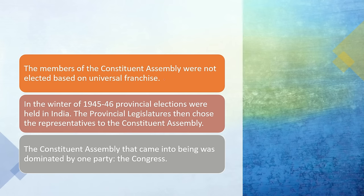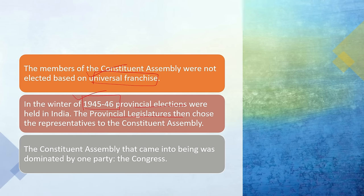Members of the Constituent Assembly were not selected on the basis of Universal Adult Franchise — meaning not every citizen voted directly. Instead, in the winter of 1945–46, there were provincial elections, and the representatives chosen by those provincial legislatures became the Constituent Assembly members. The Constituent Assembly that came into being was mainly dominated by the Congress party.